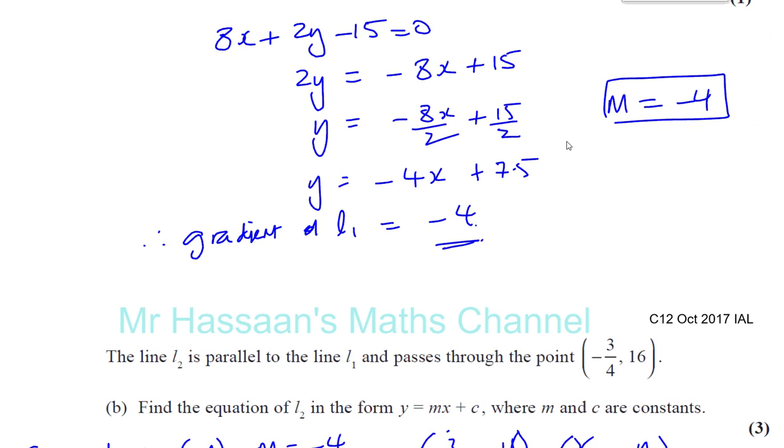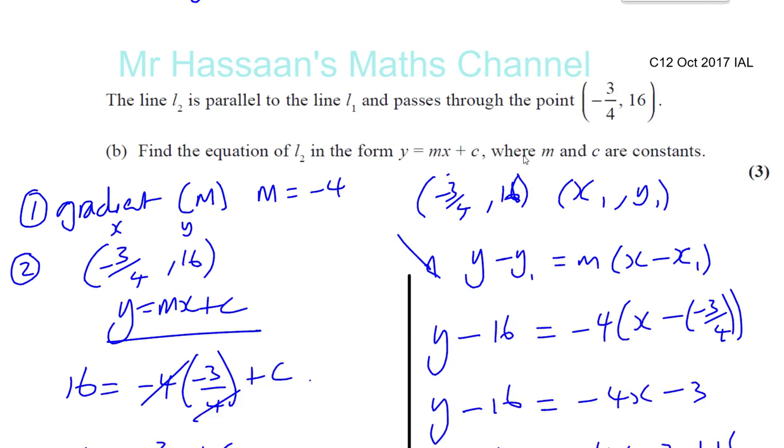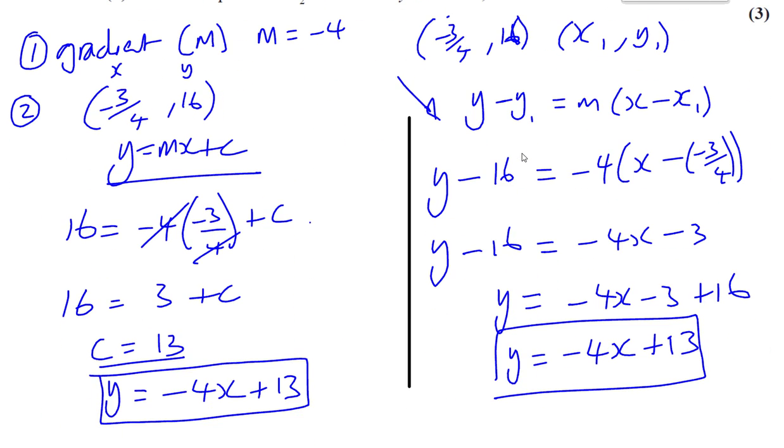Okay. So that's question number one. Finished. Okay. Finding the gradient and then finding the equation of the line. Remember, two things you need to find the equation of the line is the gradient of the line and any point on the line. Okay. All right. Thank you for watching.